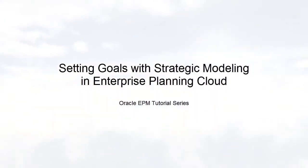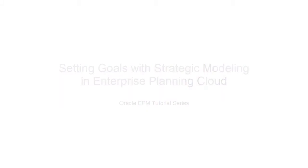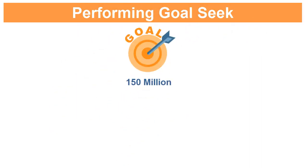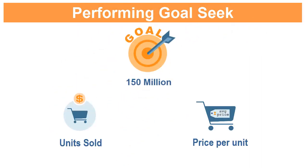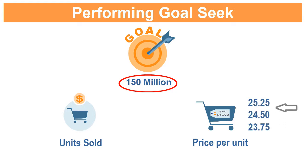Welcome to this step-by-step tutorial on how to set goals for accounts in strategic modeling. With Goal Seek, you specify a target value for an account and determine the changes to a related account needed to achieve that target. For example, you can identify a sales target for a product and use Goal Seek to determine the change needed in the price per unit to achieve that sales target.